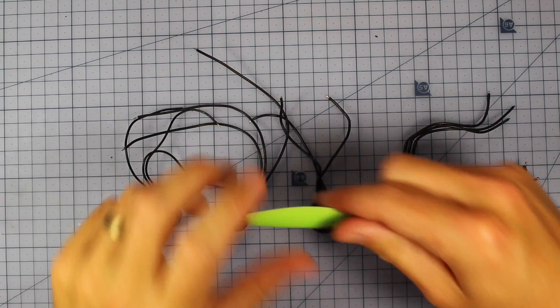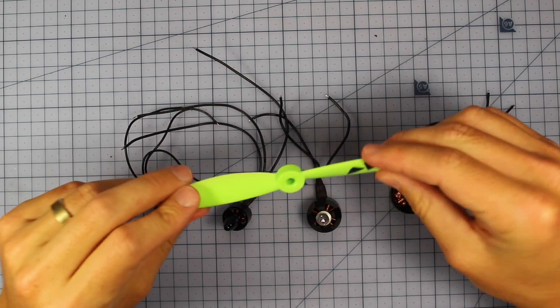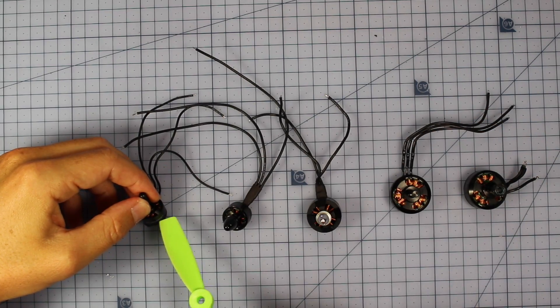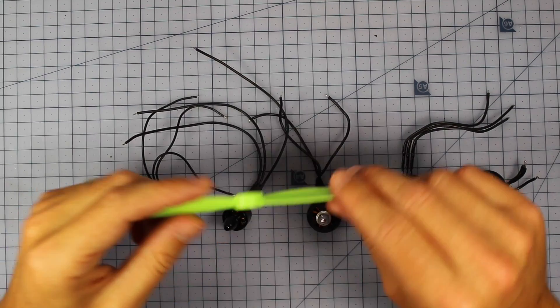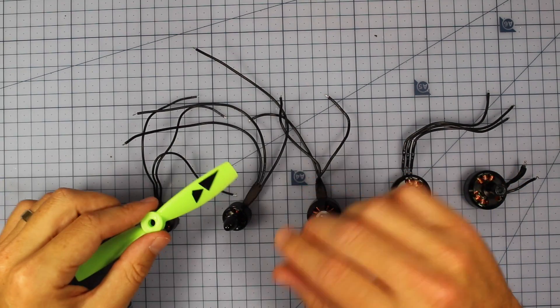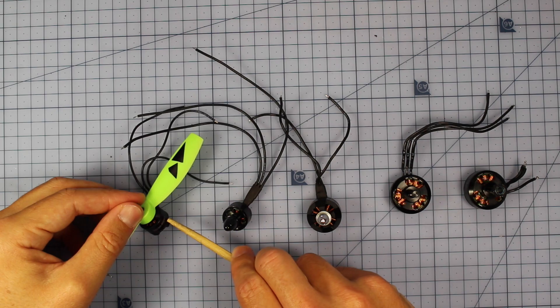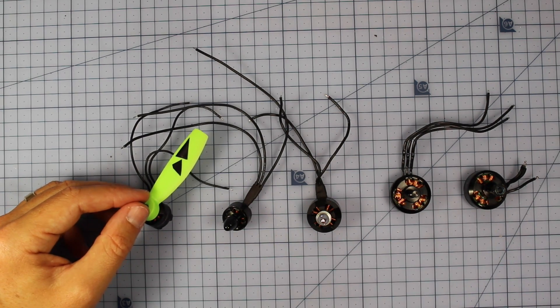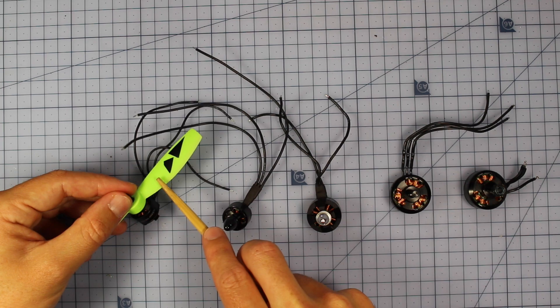So you might say to yourself, Stu, I want to have the most power out there, I'm going to put a massive prop on this motor because it's a 4000 KV. But that would be a disastrous idea, because if you put this something, even though it has a high KV rating, all these KVs are without load on them.